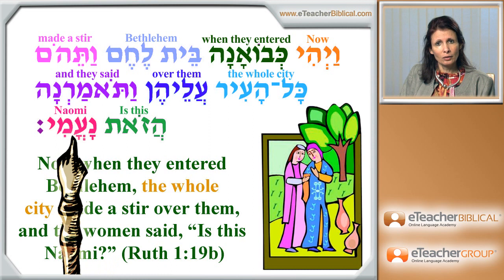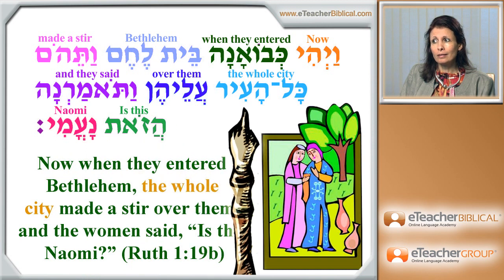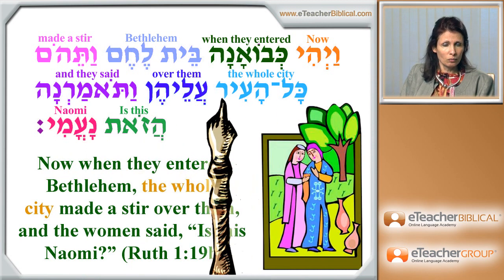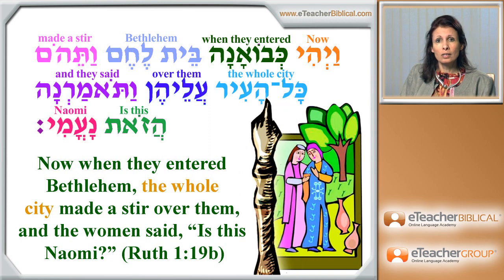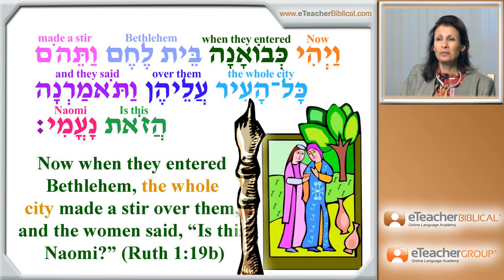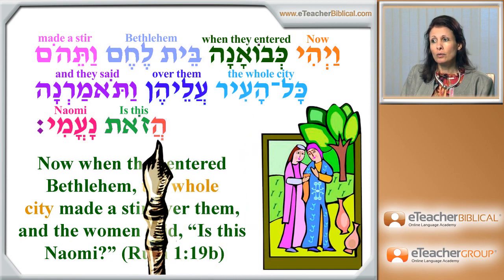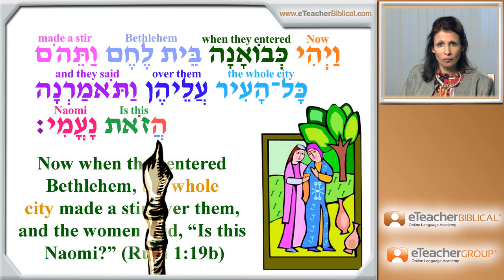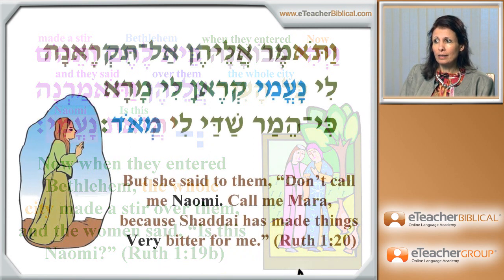In relation to grammar, we have several things to notice. First of all, you see the highlighted words here: Kol Ha'ir. You know what the phenomenon is here? Right — construct chain. The whole city, or all of the city. You can guess this is a construct chain. What else do you want to see? You want to see the interrogative He in the word Hazot. How do we know it's an interrogative He? Notice that the He has the Chatev Patach, the reduced vowel underneath. So that's a question in Hebrew: Is this Naomi?